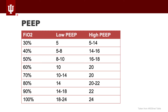Next, increase PEEP to try to recruit the in-between areas of the lung and improve oxygenation. The right PEEP is very patient-dependent: a thin person will probably need less PEEP than a morbidly obese person, whose body weight may cause alveolar collapse requiring more pressure to recruit. The ARDSnet table provides both a low-PEEP and high-PEEP strategy based on the patient's FiO2 level — use it as a starting point, but individualize to each patient.